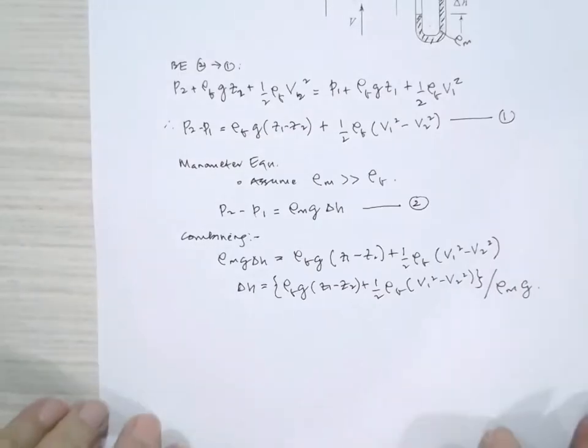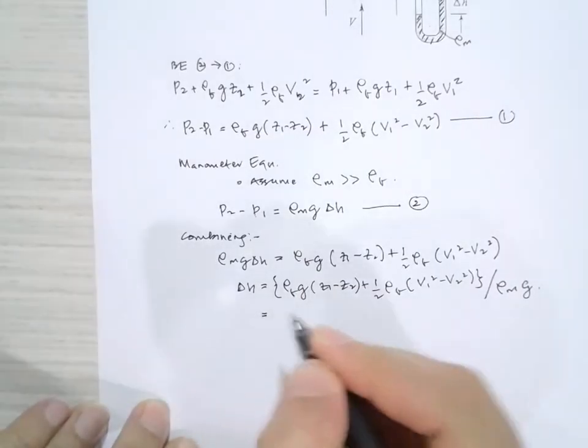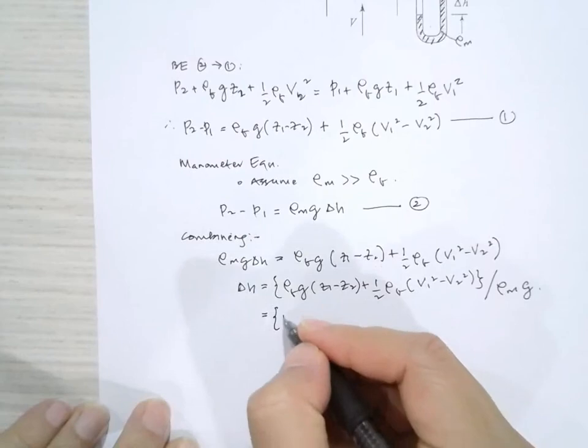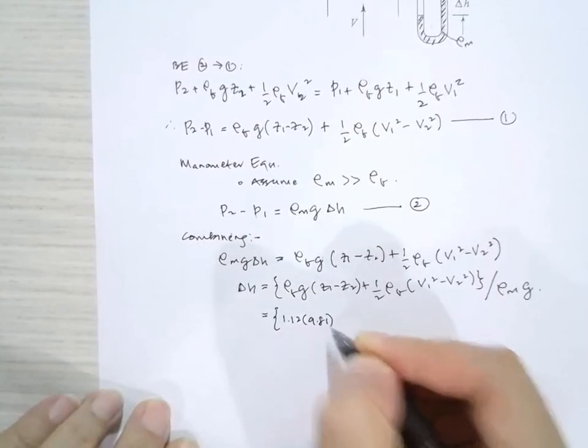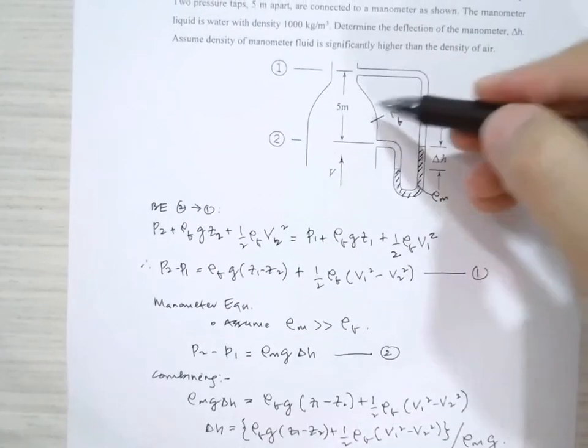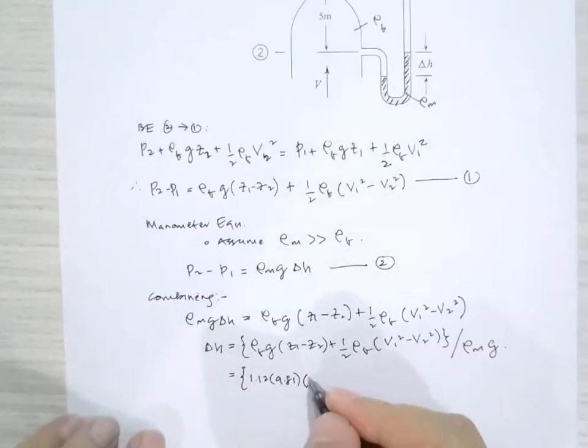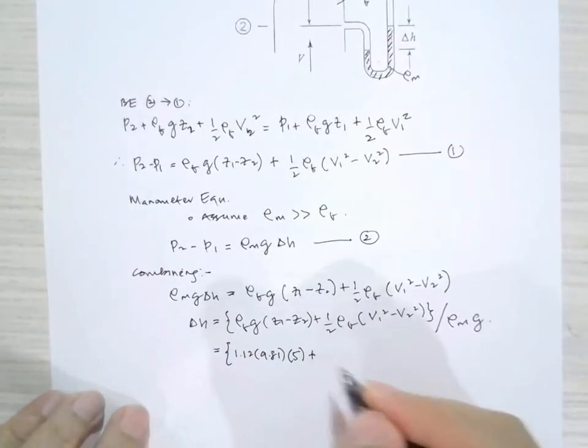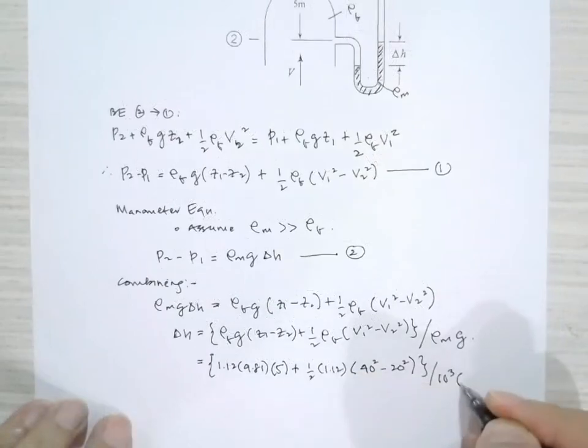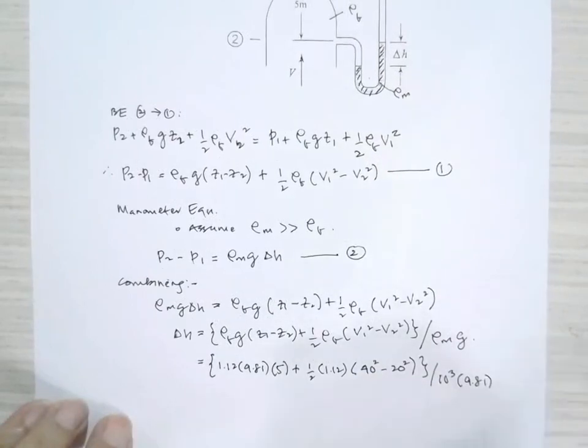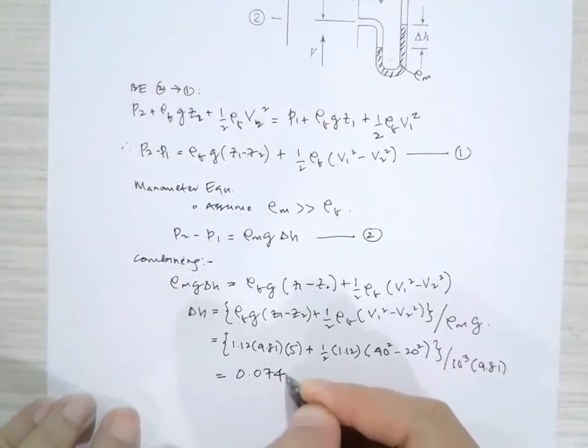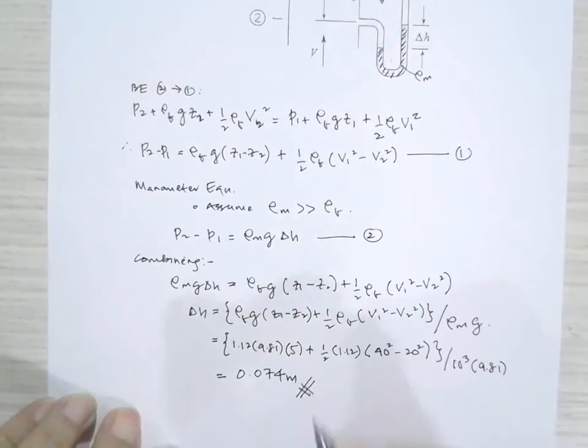Now we can substitute the numerical values. So rho F is 1.12, times 9.81, times Z1 minus Z2 is 5 meter, plus half rho F V2 squared.